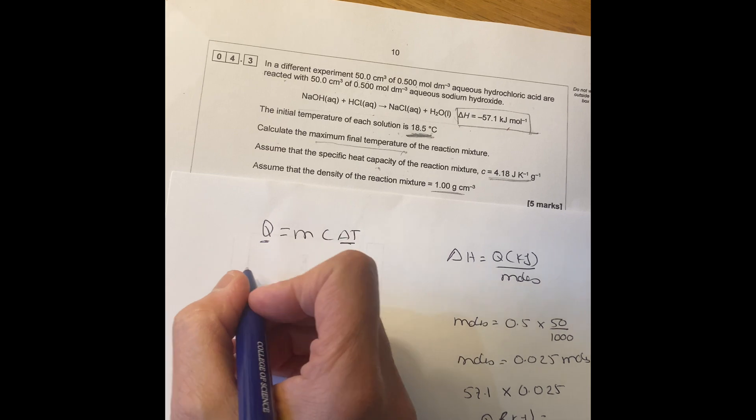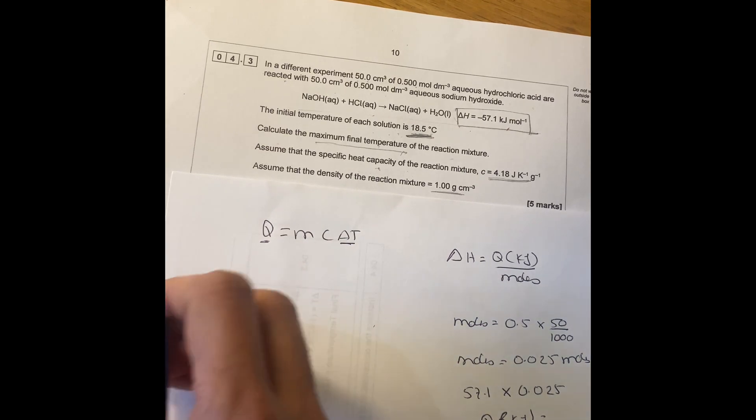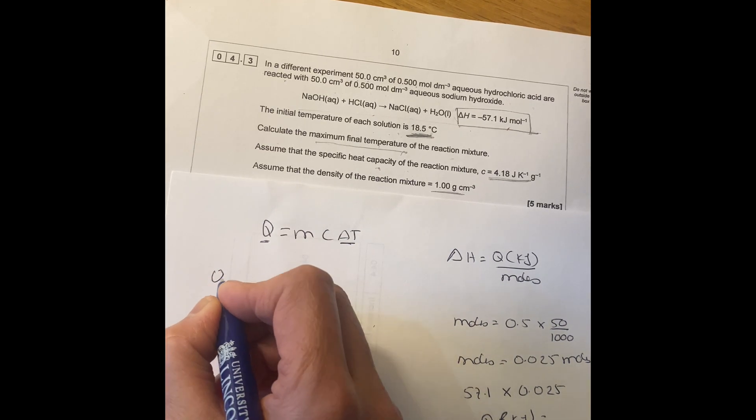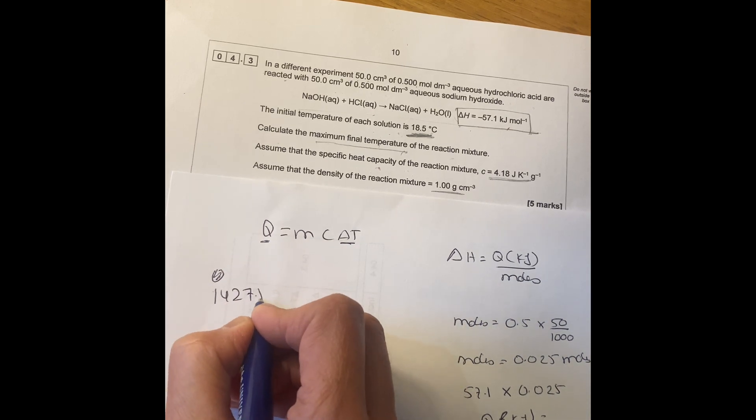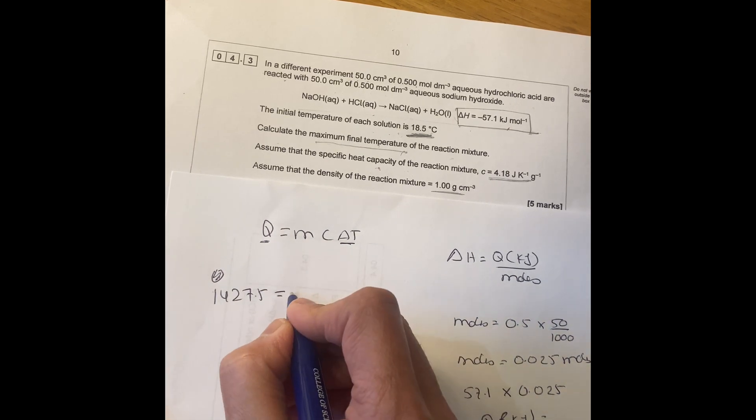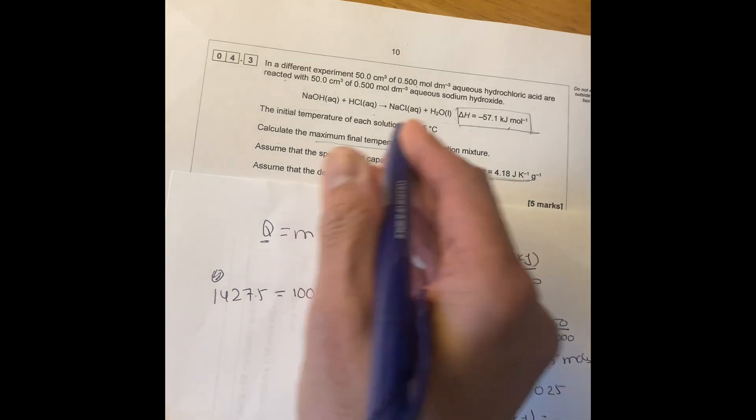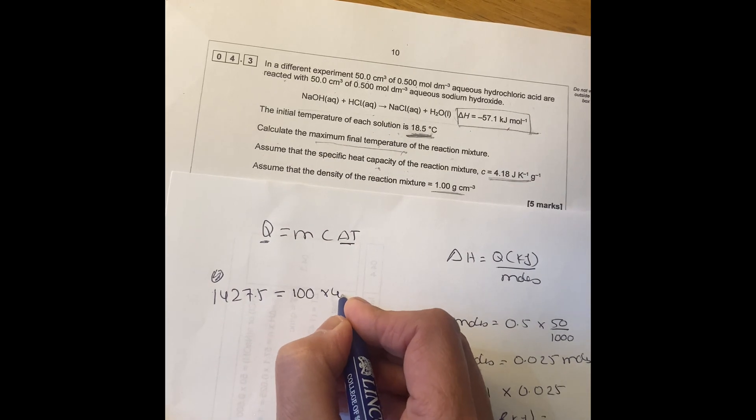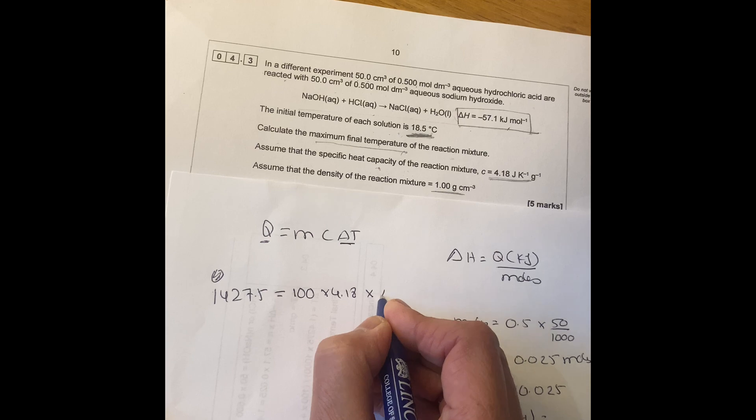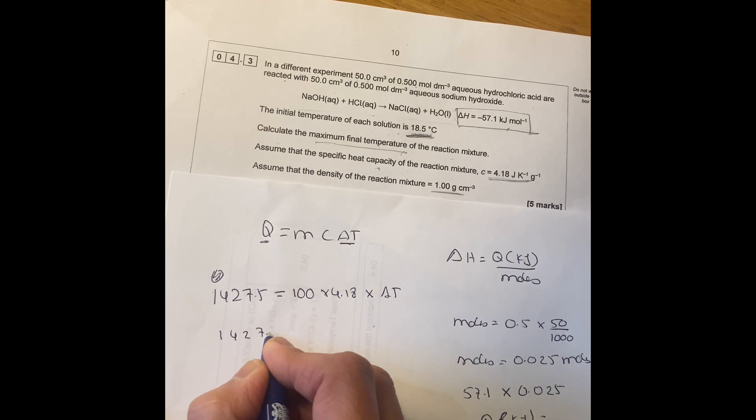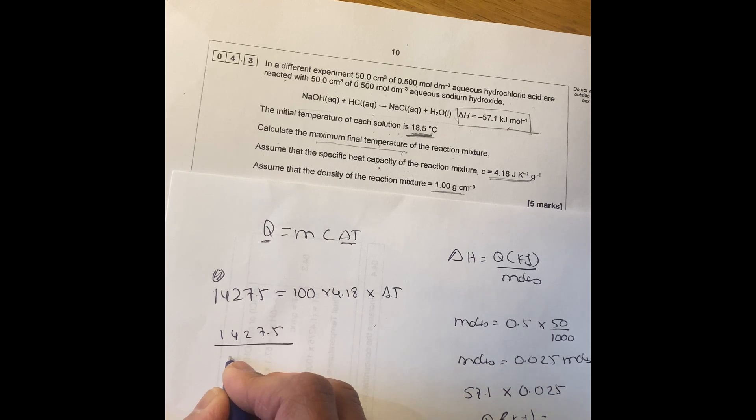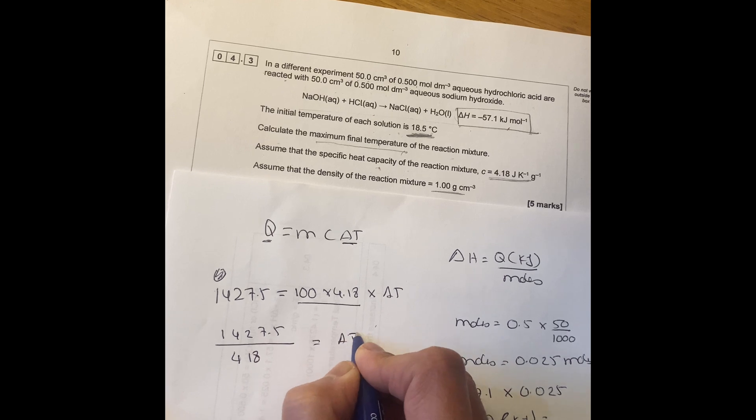So you rearrange this will be 1427.5 equals to mass which is 100 because it's 50 plus 50 times 4.18 times delta T. Then you've got 1427.5 divided by 418 which is 100 times 4.18 equals to delta T.